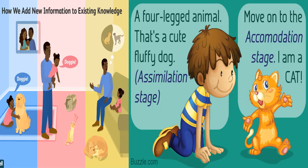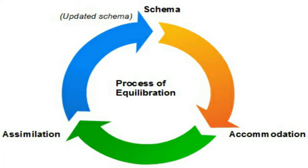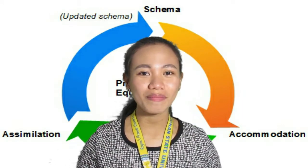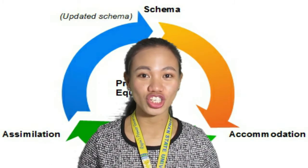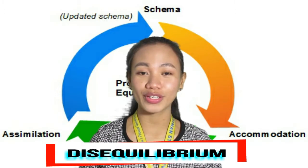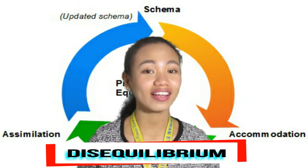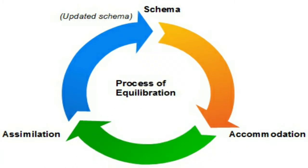Equilibration is the force which moves development along. Piaget believed that cognitive development did not progress at a steady rate, but rather in leaps and bounds. Equilibrium occurs when a child's schema can deal with most new information through assimilation. However, an unpleasant state of disequilibrium occurs when new information cannot be fitted into existing schemas. Equilibration is the force which drives the learning process, as we do not like to be frustrated and will seek to restore balance by mastering the new challenge.